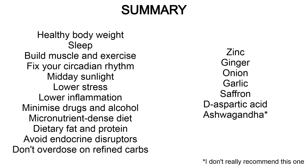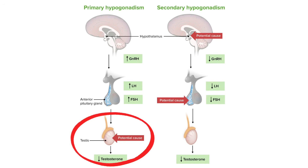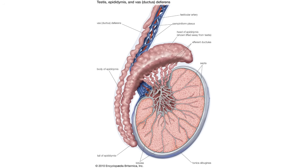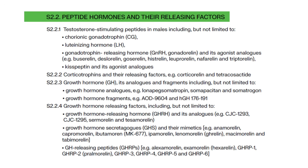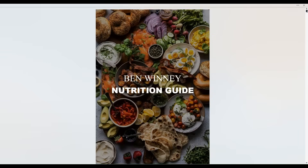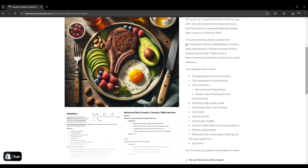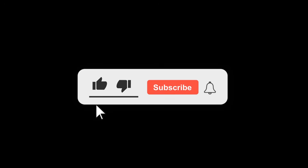Those are the testosterone stimulating peptides: kisspeptin, GnRH, and LH. If you follow the things described in this video, you'll get these peptides in a pretty good place. If you still have low testosterone after optimizing these hormones, there's a good chance you have poor testicular health, which will require slightly different strategies to fix. In the next section are corticotrophins, and then a big video on growth hormone. Check out my testosterone optimization guide and nutrition guide if you want more detail.